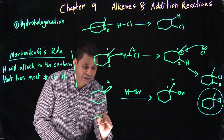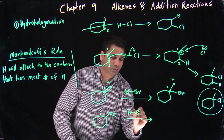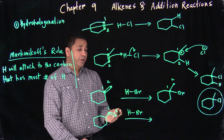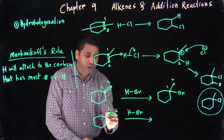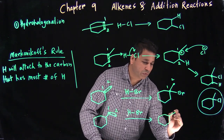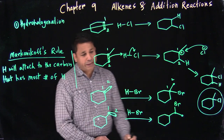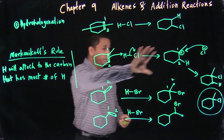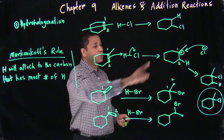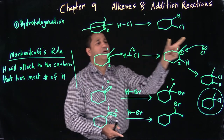One more example with HBr: carbon-2 has the most number of hydrogens, so H goes on carbon-2 and Br goes on carbon-1. Addition reactions are very straightforward — you can write the mechanism or go straight to the product. Expect both types of questions on the exam: predicting the product and writing the full mechanism.